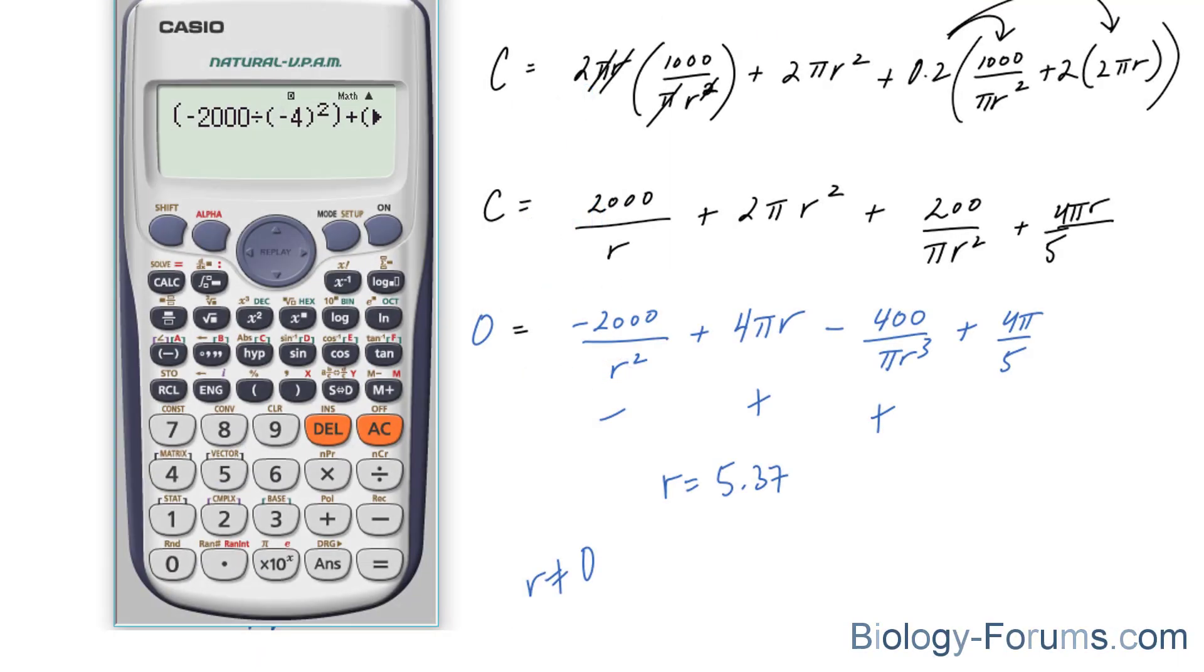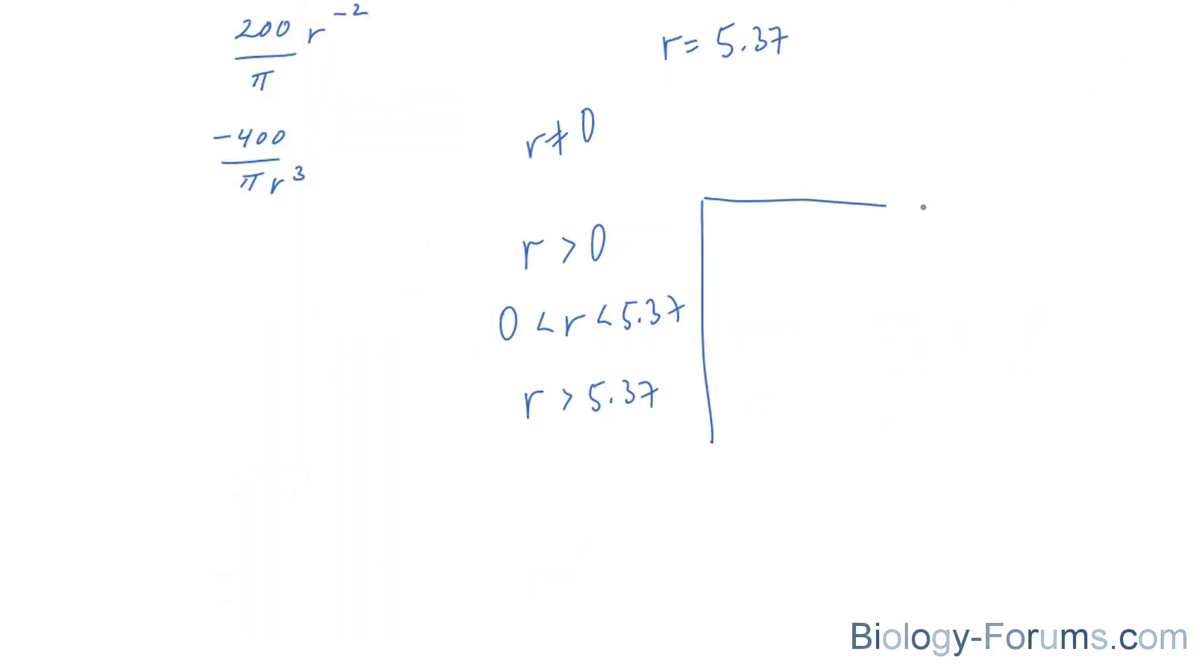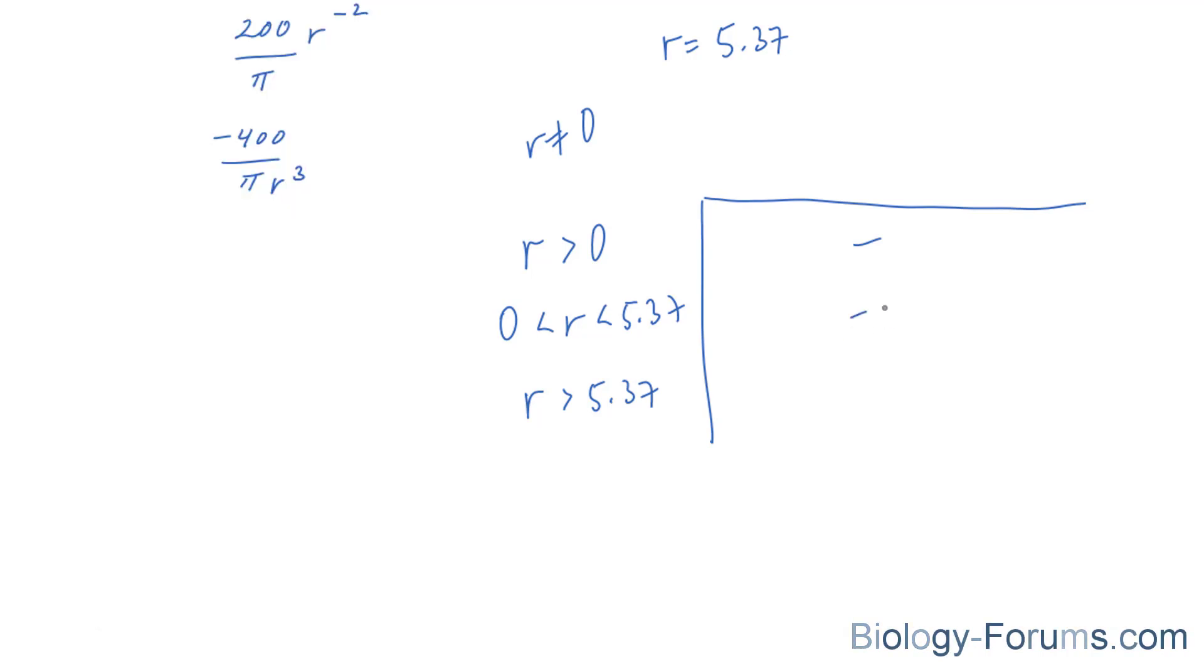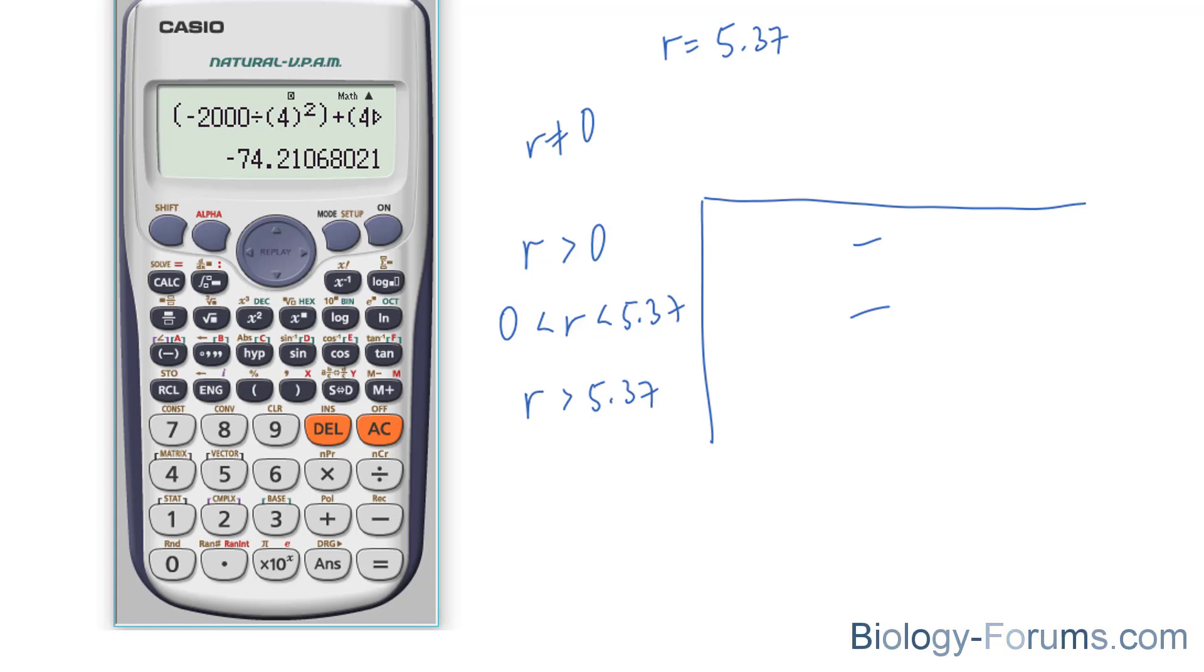Here I have an example of when r is less than 0, and I end up with a number that is negative. Next, I'll try a number that is in between 0 and 5.37, and I get a negative number. And lastly, I'll try a number that is greater than 5.37. This can be any arbitrary number. I'm going to use 40, and I end up with a positive number.